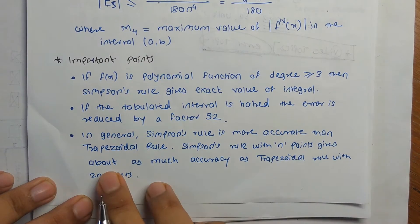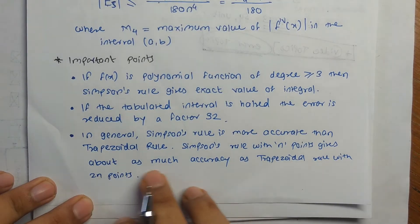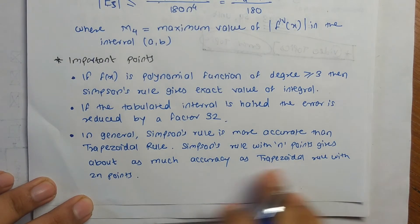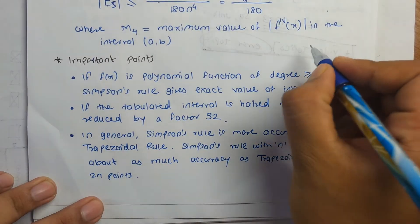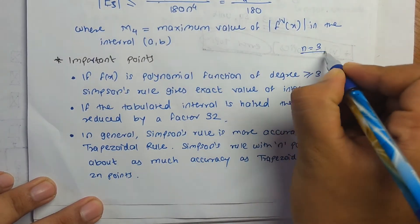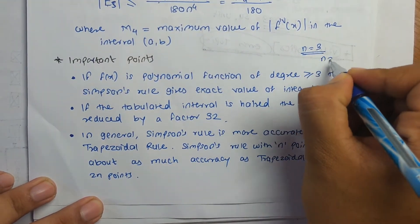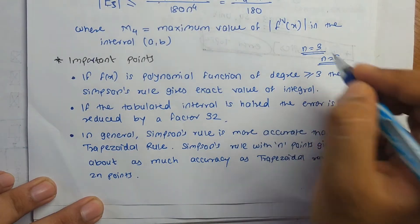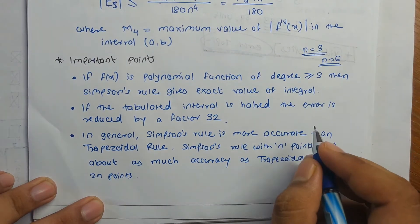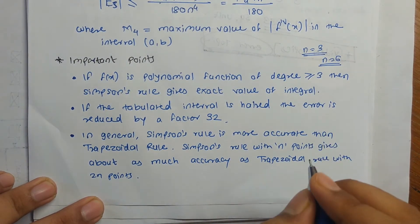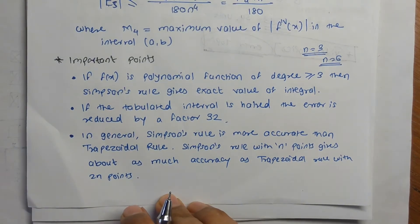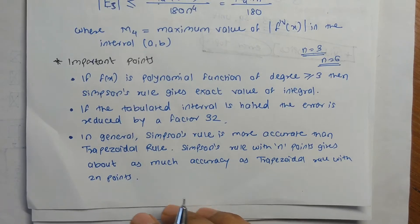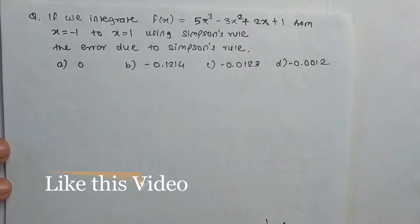The Simpson's rule with n points gives as much accuracy as the trapezoidal rule with 2n points. For example, if n = 3 in Simpson's rule and n = 6 in the trapezoidal rule, they give the same accuracy. Now we will see how to solve different problems using this error bound method.